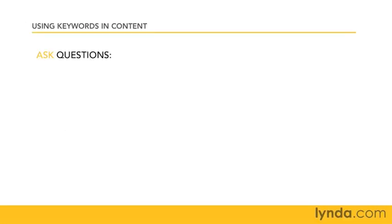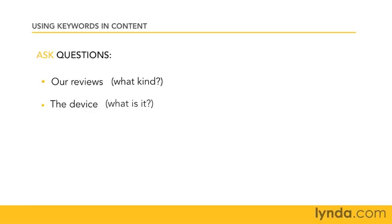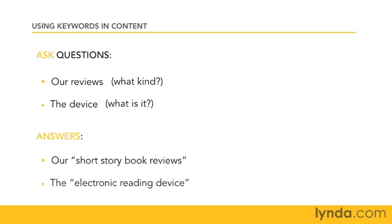Let's say the existing content of the site talks somewhere about 'our reviews' or says 'the device' — those are very non-descriptive or generic words. By thinking like a reporter you can ask 'what kind of review?' or 'what is the device?' The answers will often be a nice descriptive keyword phrase which you have previously researched. For instance, 'our reviews' becomes 'our short story reviews,' and 'the device' becomes 'an electronic reading device.' Simple, right?